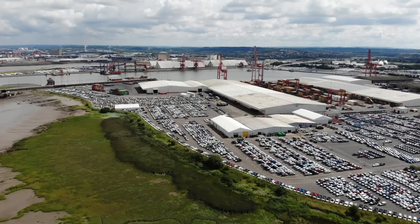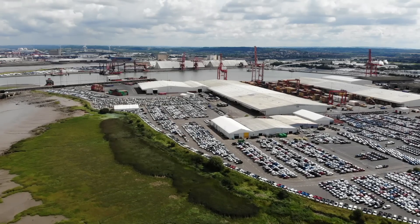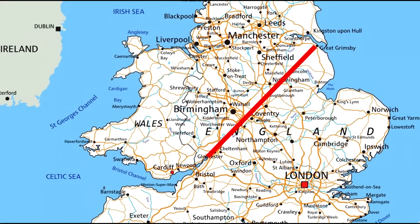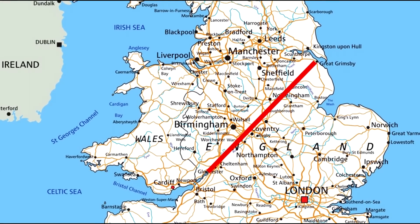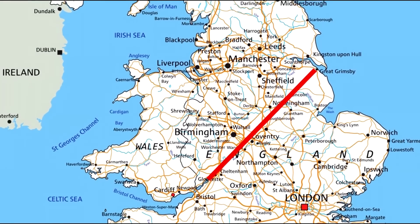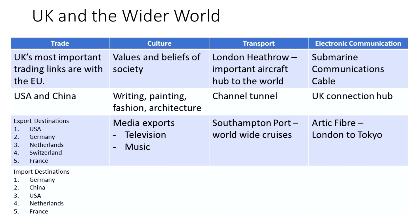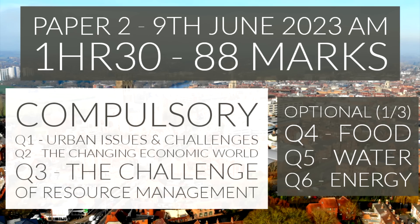This has also affected transport infrastructure across the UK, highlighted by the North-South divide. Lastly, when looking at the UK you should recognise the links we have with the rest of the world. The final section of paper 2 is section C, the challenge of resource management. There will be generic questions on resource management before students then specialise between food, water or energy.